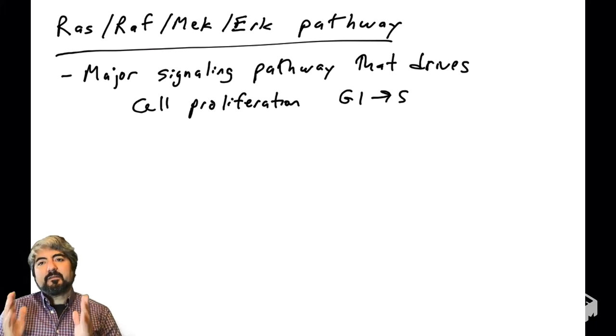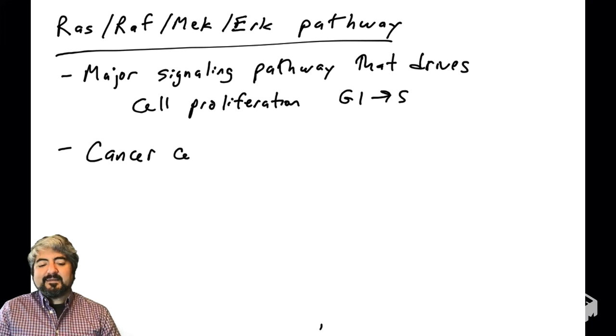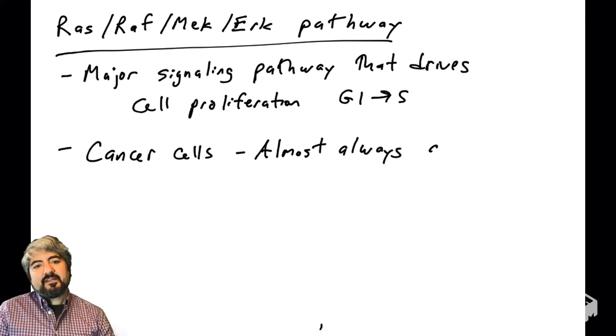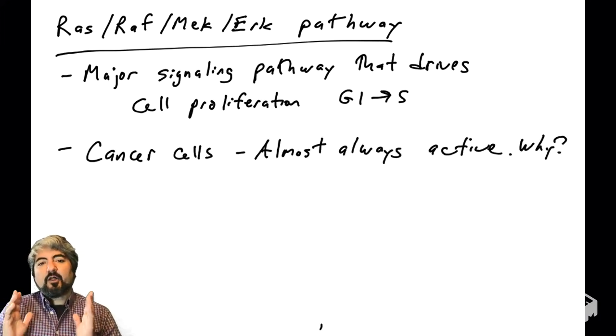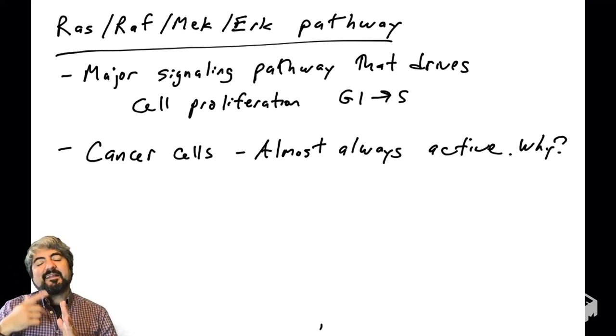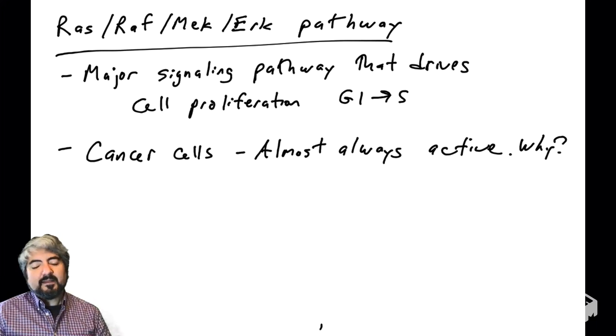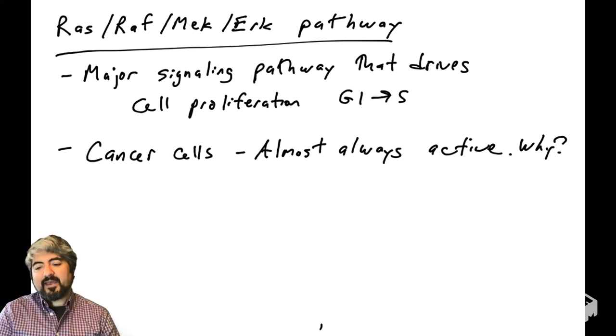And this pathway is often dysregulated in human cancers. So it's very important to understand the RAS-RAF-MEK-ERK pathway. As I mentioned in cancer cells, this pathway is almost always active. So it's constantly telling cells, time to go through the cell cycle, we need more cells.